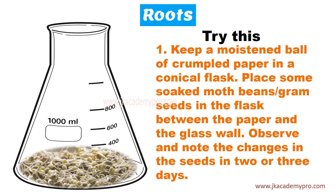For this, let's try an activity. Take a moistened ball of crumpled paper — any soft tissue paper with a little water sprinkled on it — and put it in a conical flask or glass jar. Place some soaked moth beans, gram seeds, or any other beans on the paper and leave it for a few days. Observe every day, sprinkling a little water if the seeds dry out. In two or three days, you will find white thread-like structures coming out of the seeds.